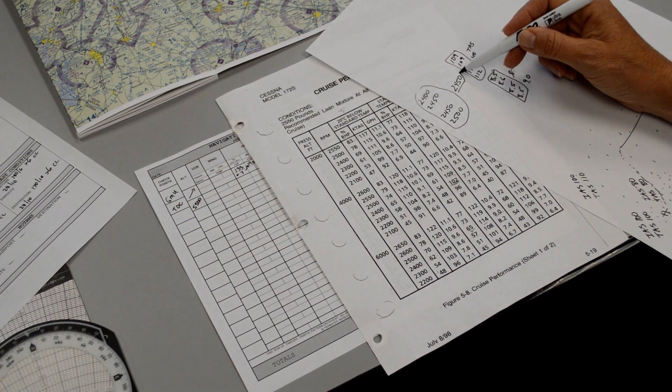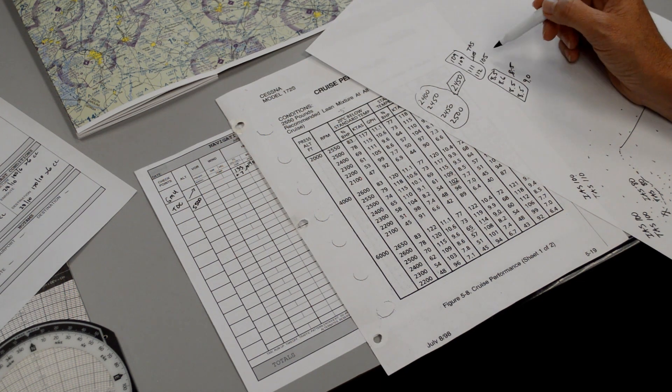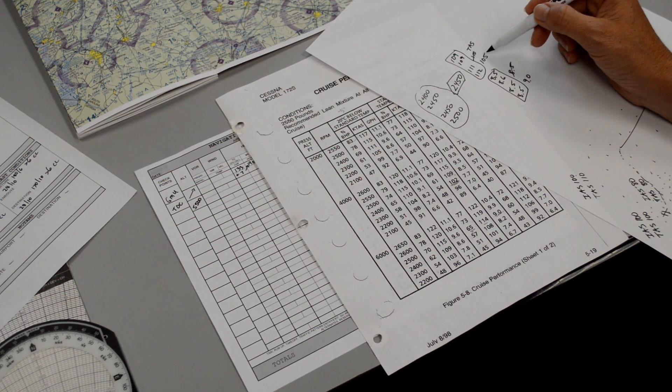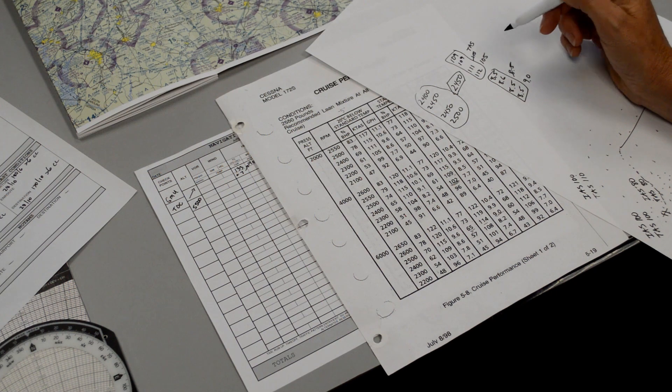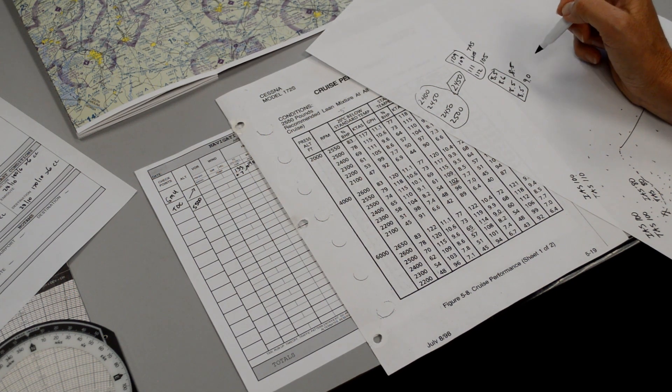So we plan on making the journey with RPM set at 2,450. We're going to use a true airspeed for cruise of 105 and we're going to use a fuel burn for cruise of 9 gallons per hour.